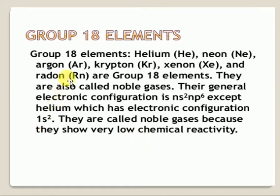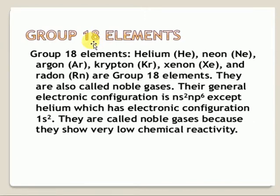The remaining elements try to attain the octet configuration. The noble gases already have the octet configuration — 8 electrons in the outermost shell. Because of complete valence electrons, they are more stable. In order to attain the octet configuration, remaining elements take part in chemical reactions by either losing electrons, gaining electrons, or sharing electrons.